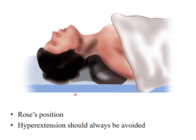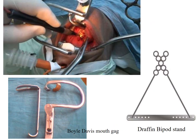The position for tonsillectomy is known as the Rose position. A shoulder roll is placed under the shoulder, the neck is extended but hyperextension should be avoided. The surgeon sits on the head side of the patient, who is supine. The instrument used is the Boyle-Davis mouth gag with bipod stands, making it a self-retaining structure so both hands of the surgeon are free.